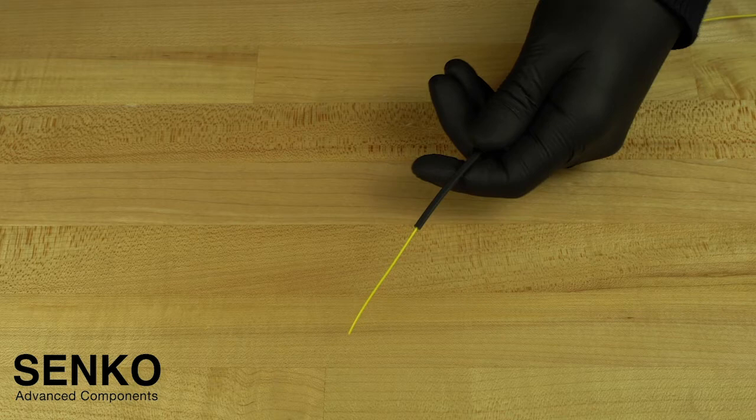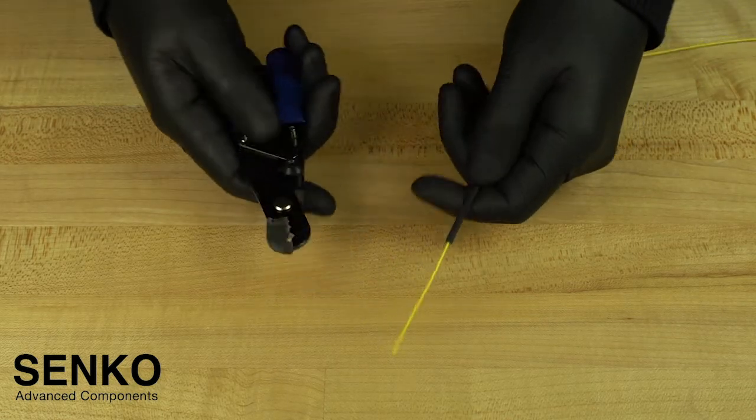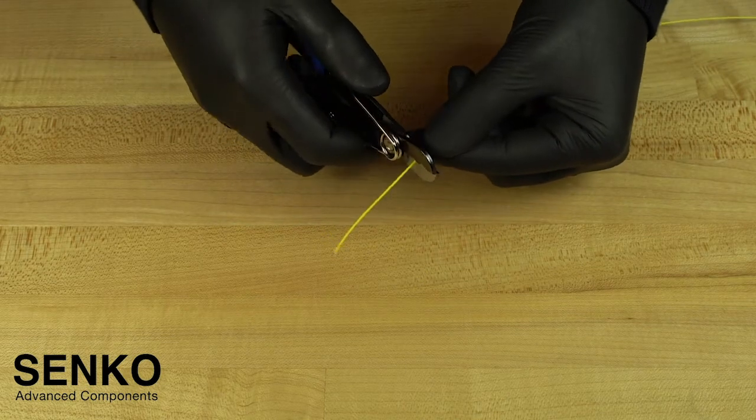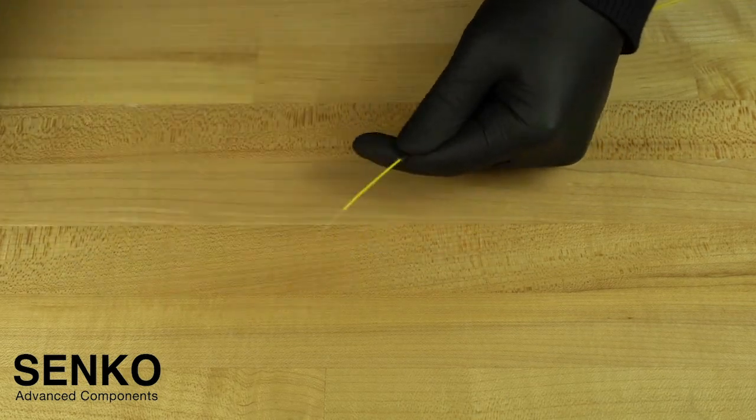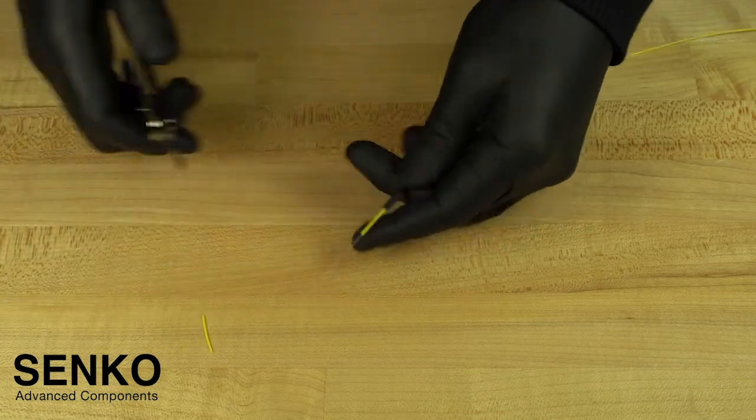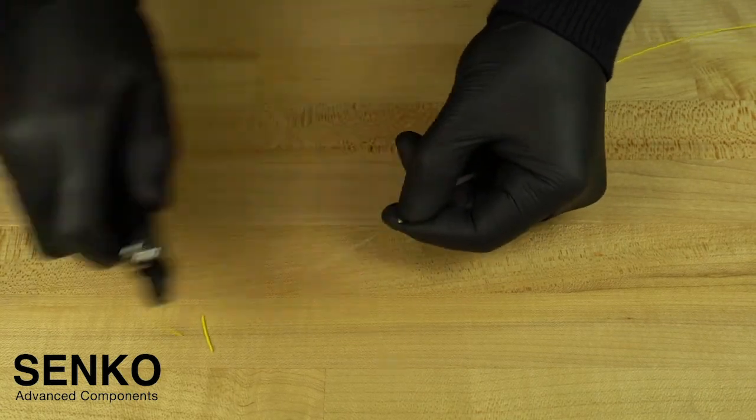Now, this step applies for the 900 micron buffered fiber only. Strip the 900 micron buffer from the fiber in about 15mm increments from the end of the tube to the end of the fiber using the appropriate hole on your cable strippers.